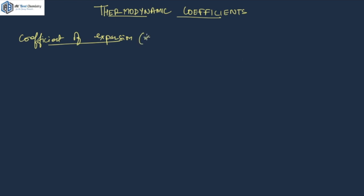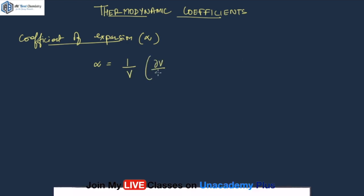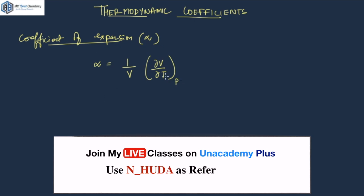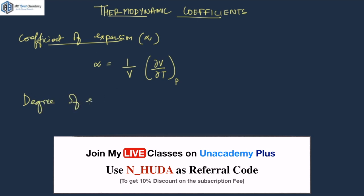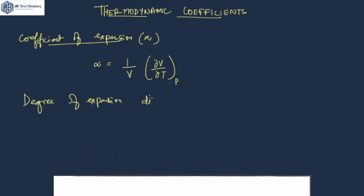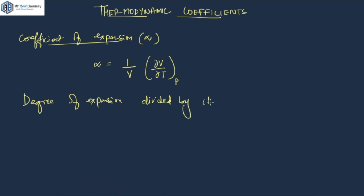This particular thing is denoted by alpha and sometimes it is also called the degree of expansion. The value alpha is given by: it equals 1 by V and del V by del T at constant P. If you want to define this, it is the degree of expansion divided by the change in temperature at a constant pressure, because dV is going to tell you the degree of expansion.